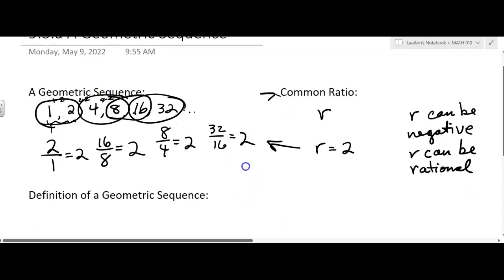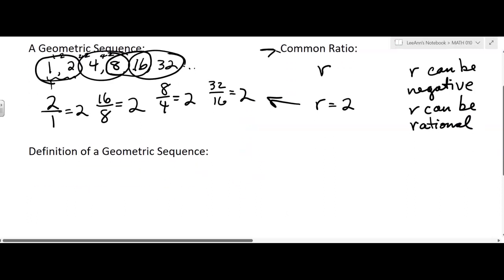All right, so what's the definition of a geometric sequence? Well, you have a first term, and then the next term is multiplied by R. The next term, well, it's A times R, oops, A sub 1 times R times R. But we're going to write that as A sub 1 R squared.